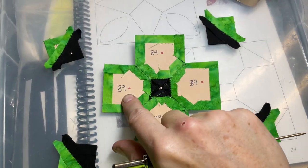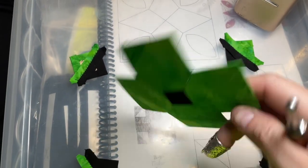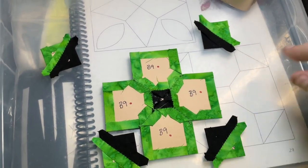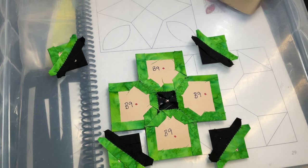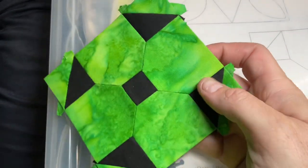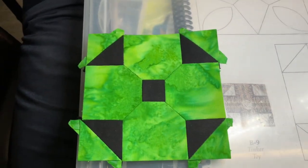So I've attached the fourth side, so now this is what I have in the center. And now I'm going to attach my corner sections. So I've added the corners and now I've completed my B9 block.